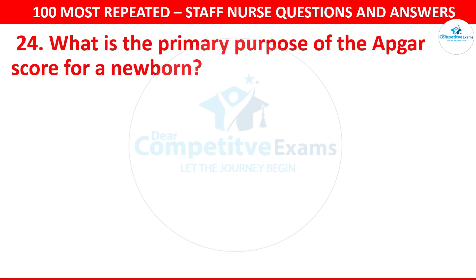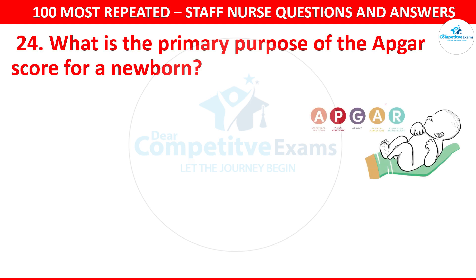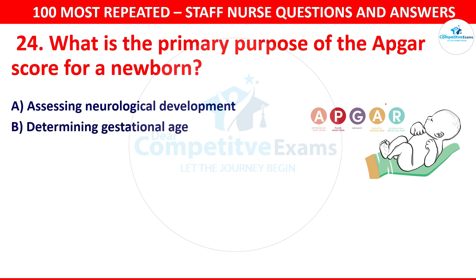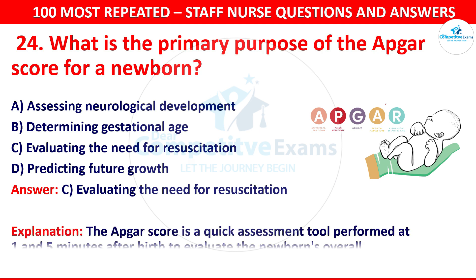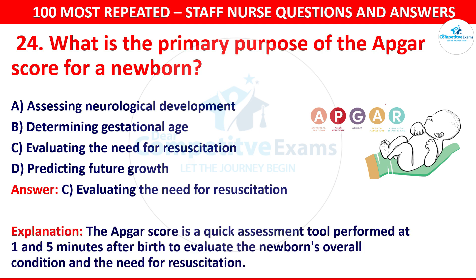Question 24. What is the primary purpose of the APGAR score for a newborn? The options are assessing neurological development, determining gestational age, evaluating the need for resuscitation or predicting future growth. The correct answer is evaluating the need for resuscitation. The APGAR score is a quick assessment tool performed at 1 and 5 minutes after birth to evaluate the newborn's overall condition and the need for resuscitation.